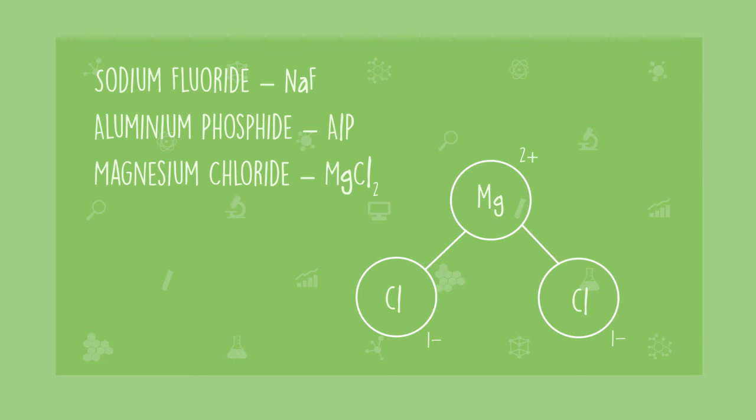You might already be able to see other patterns here too. In each compound, the first element is a metal: sodium, aluminum, and magnesium. And the second element is a non-metal: fluorine, phosphorus, and chlorine. In each case, the ending of the non-metal has been changed to -ide.